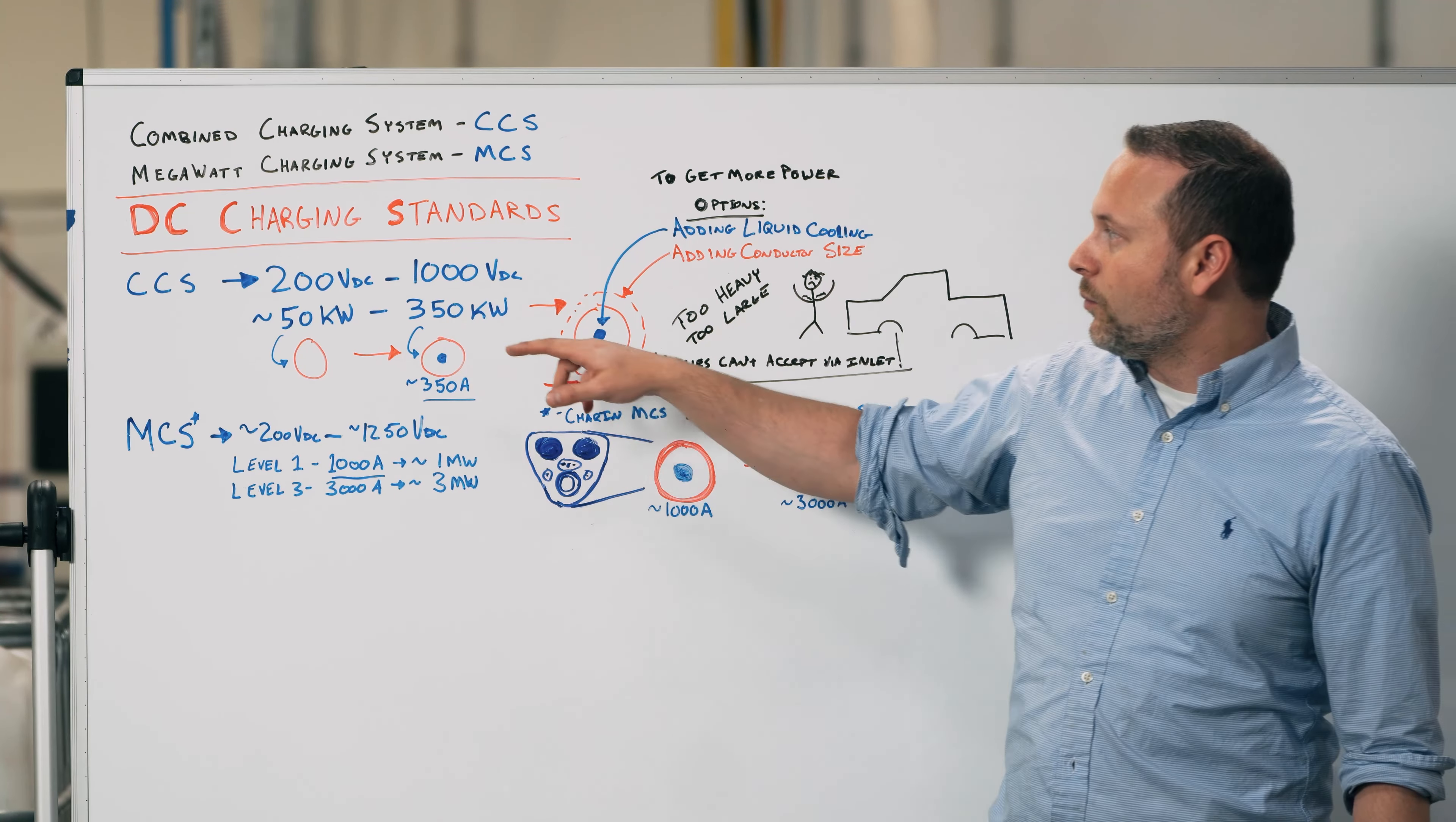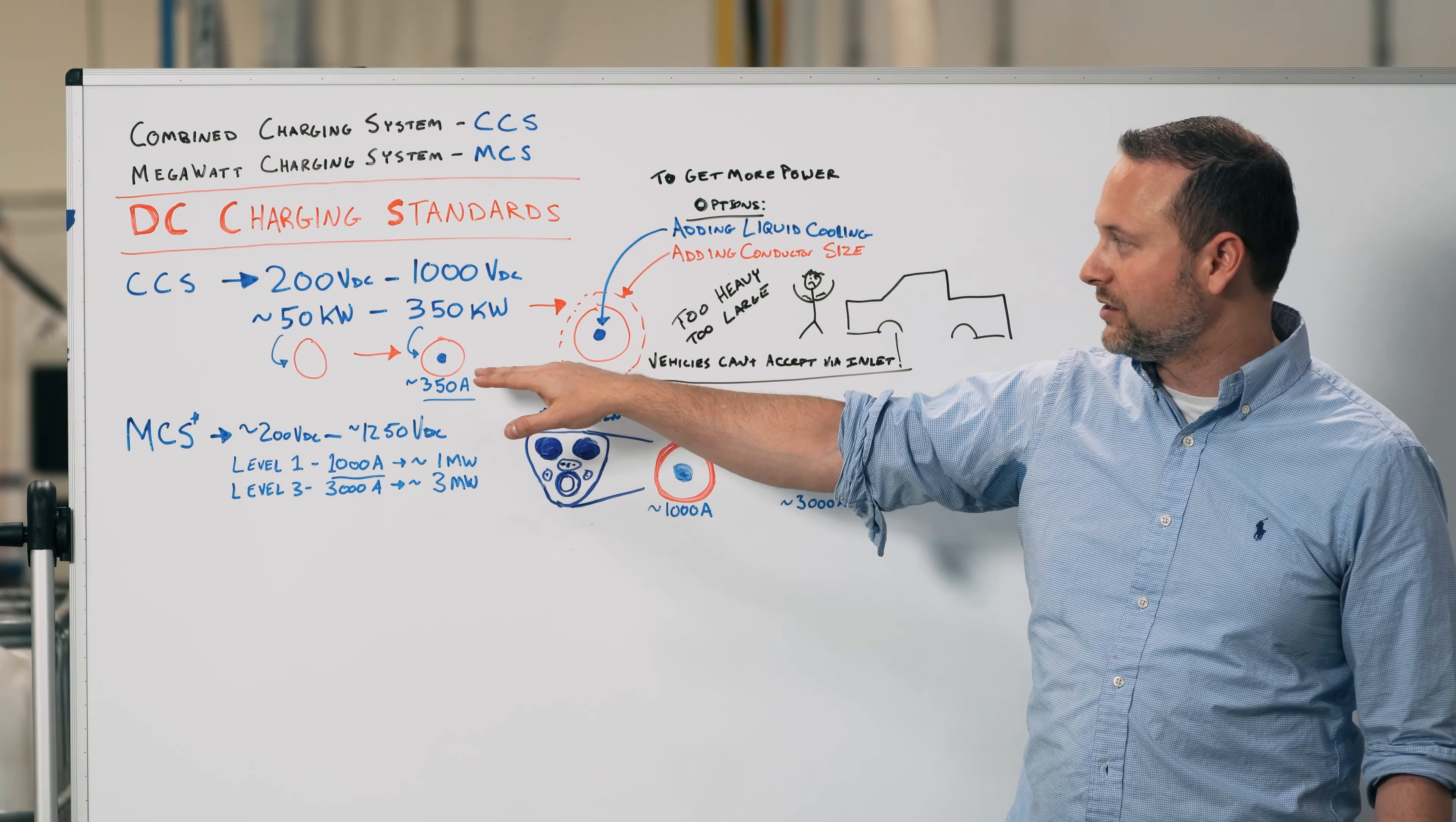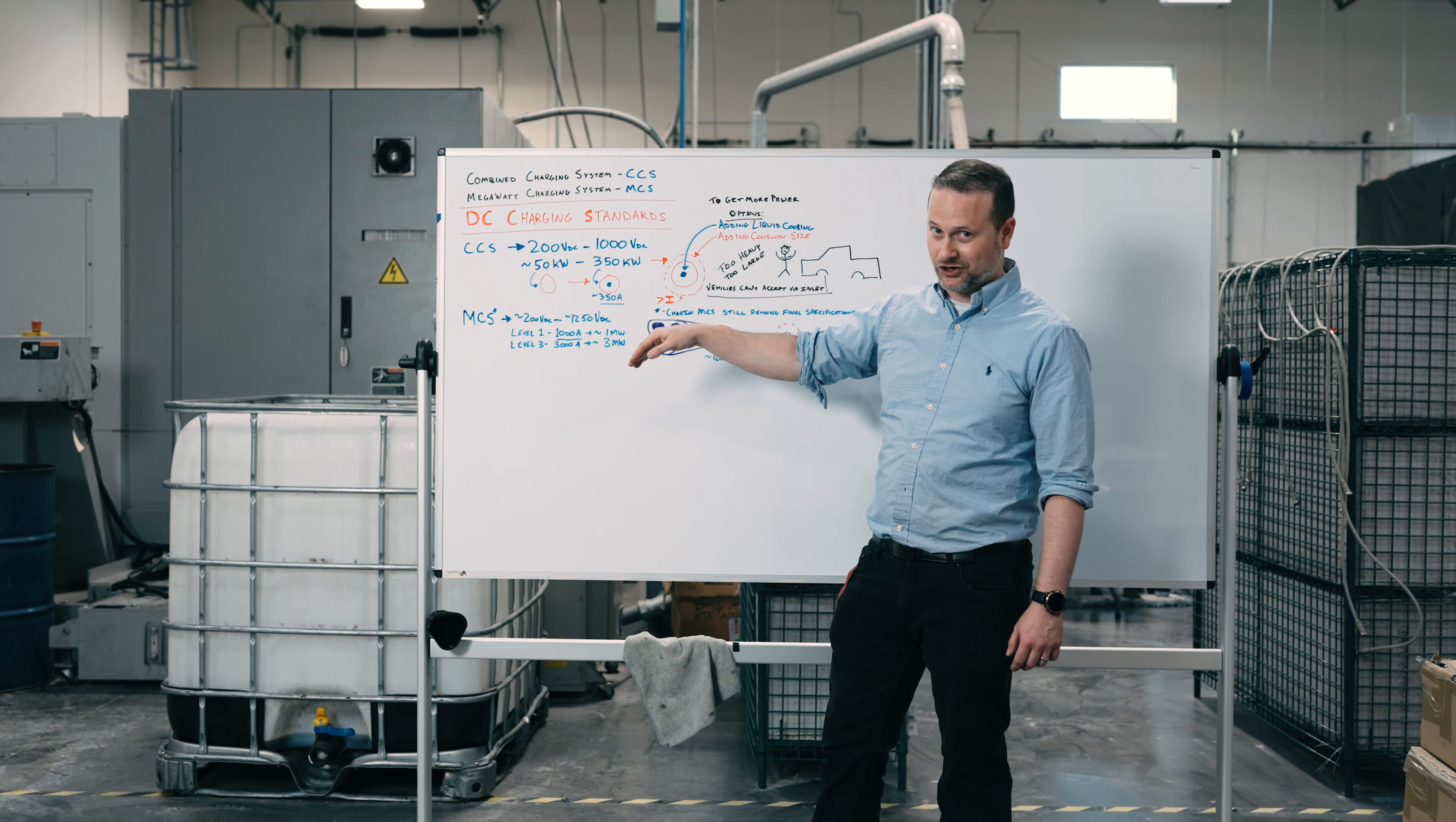When it comes to the higher power charging stations, you're going to notice that the conductor sizes are about the same size. But the way they achieve the higher currents through the conductor itself is by adding that liquid cooling. I wanted to clarify that for this video to talk about how we're going to achieve megawatt charging.